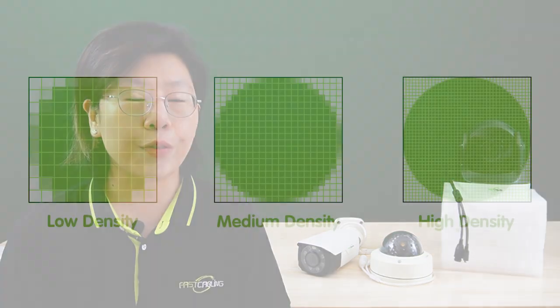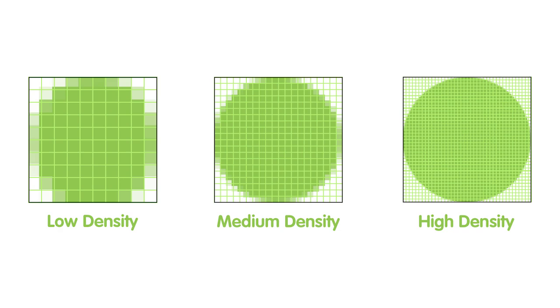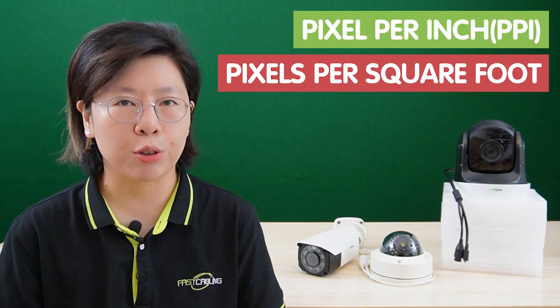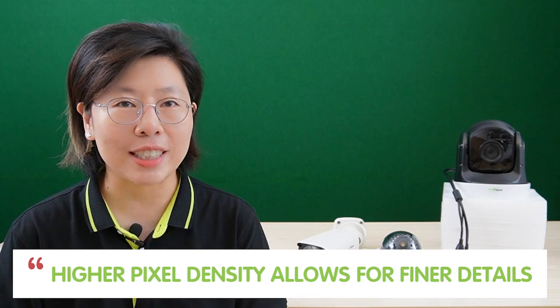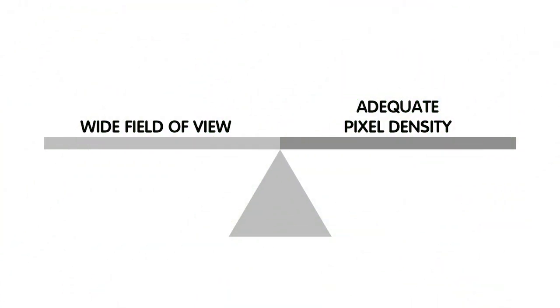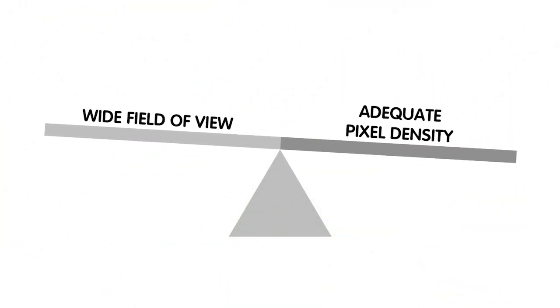One more important concept is pixel density, because it directly impacts image quality, screen resolution, print quality, the ability to zoom and crop, and the overall user experience. Pixel density in the context of surveillance refers to the concentration of pixels within a given area of an image or video frame. It is typically measured in pixels per inch or pixels per square foot. Higher pixel density allows for finer details to be represented, which is crucial for identifying objects, individuals, or events in surveillance footage.